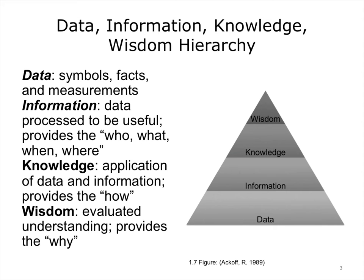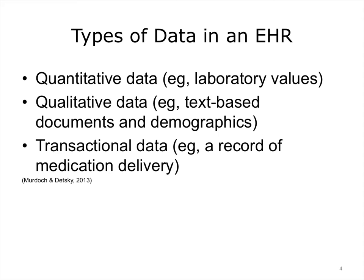Now we will look at aspects of the data layer. The data layer of the DIKW hierarchy contains many types of data: laboratory results, x-rays, blood pressure data, physician's notes, and so on. Data in an EHR or other health information system, such as a laboratory information system or radiology information system, can generally fall into one of three categories.